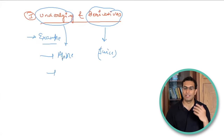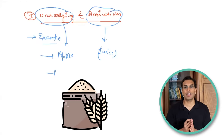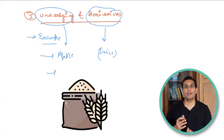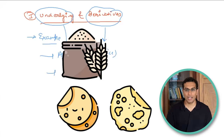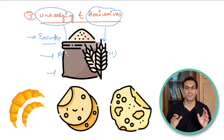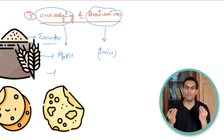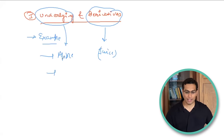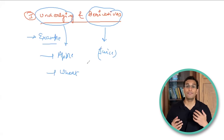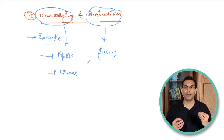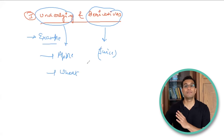Let's pick a second example: wheat. From wheat, you can make rotis. In Mexico, people make tortillas. In France, people make croissants. So from wheat you can make many things. The underlying is wheat, but rotis, tortillas, or croissants — those all become derivatives.